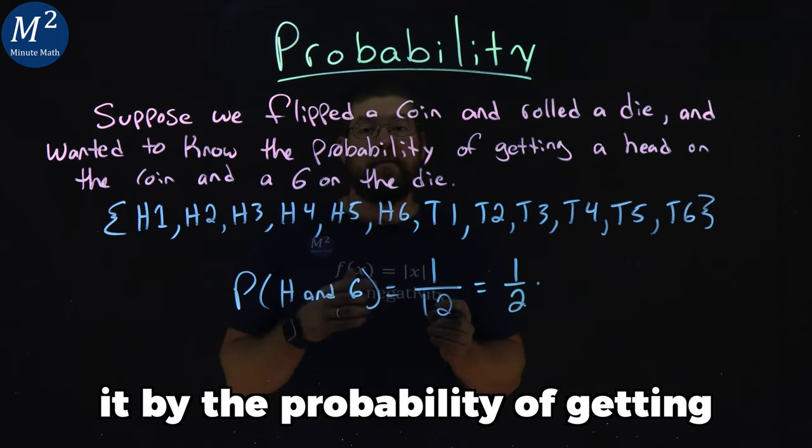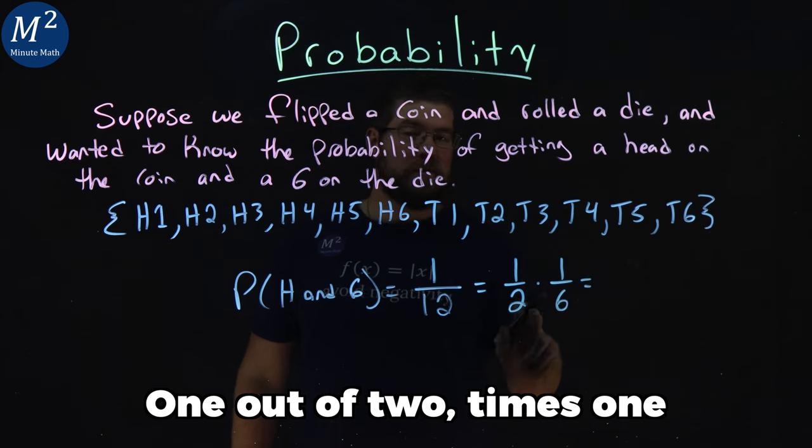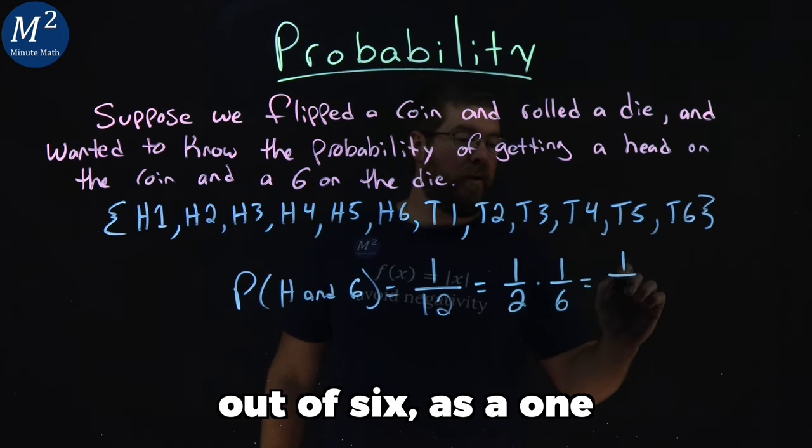And multiply it by the probability of getting a six on the die, which is one out of six. One out of two times one out of six is one out of twelve.